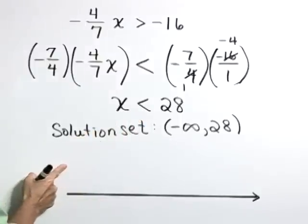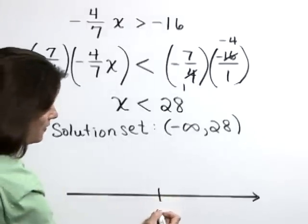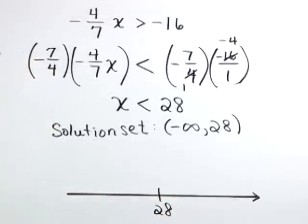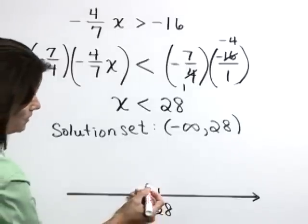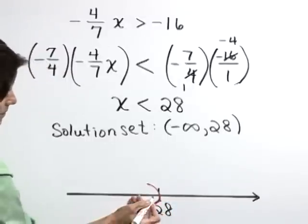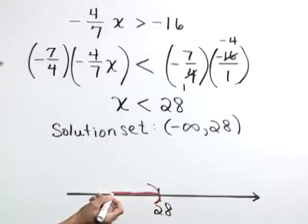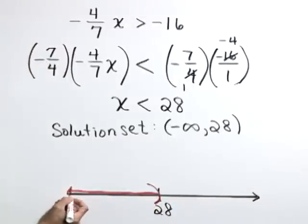Now for the graph form of the solution, let's just identify the value 28 on this number line. 28 is not included, so we'll use a parenthesis there. And bold the arrow to the left, with a bold arrow on the left indicating values from negative infinity, up to 28.